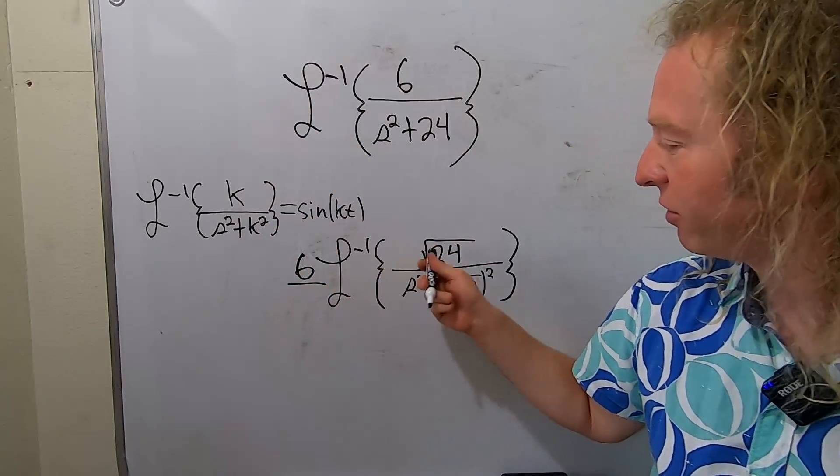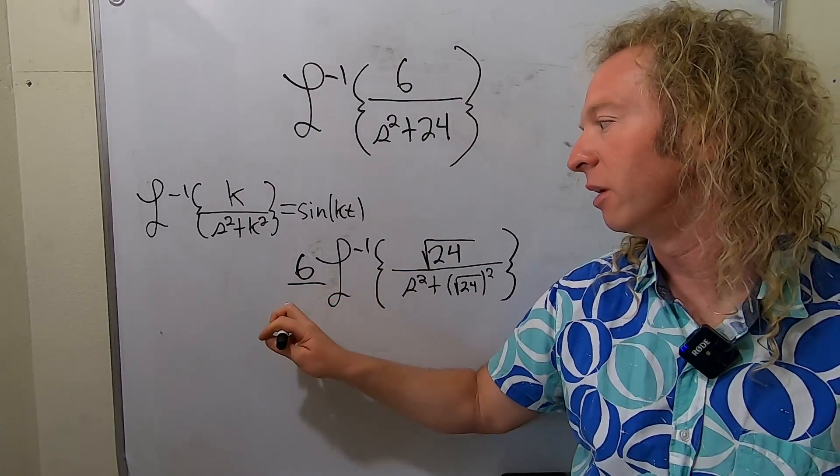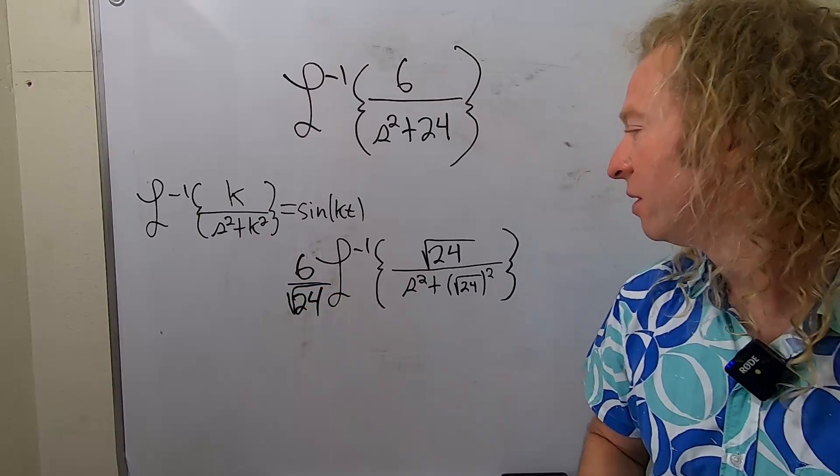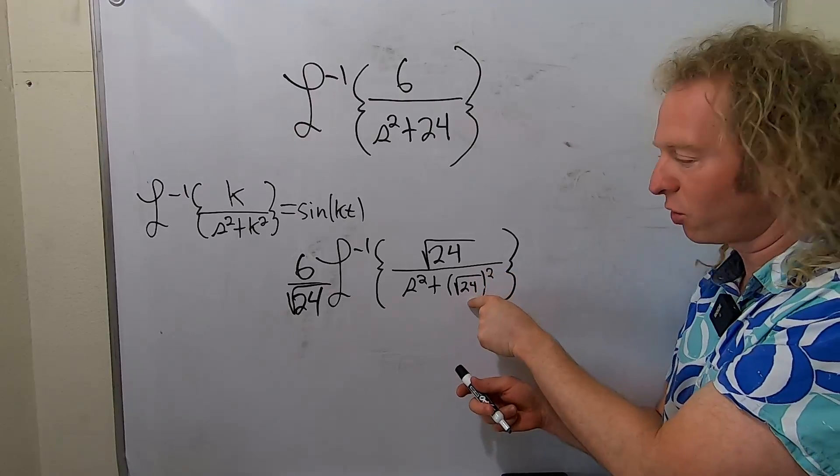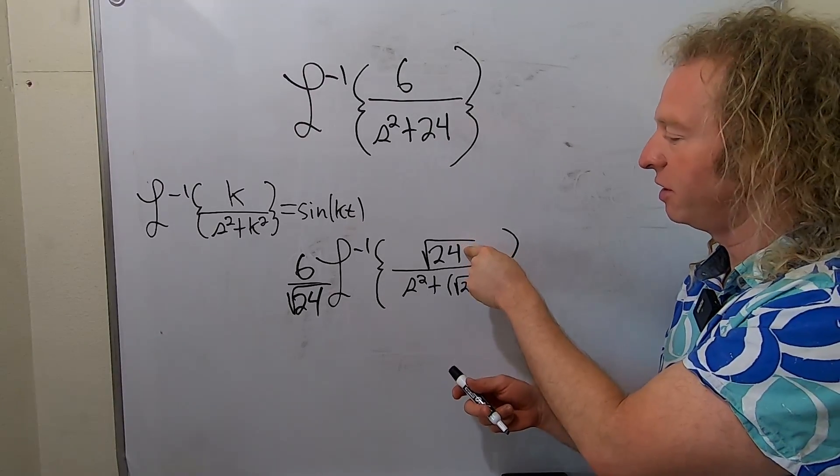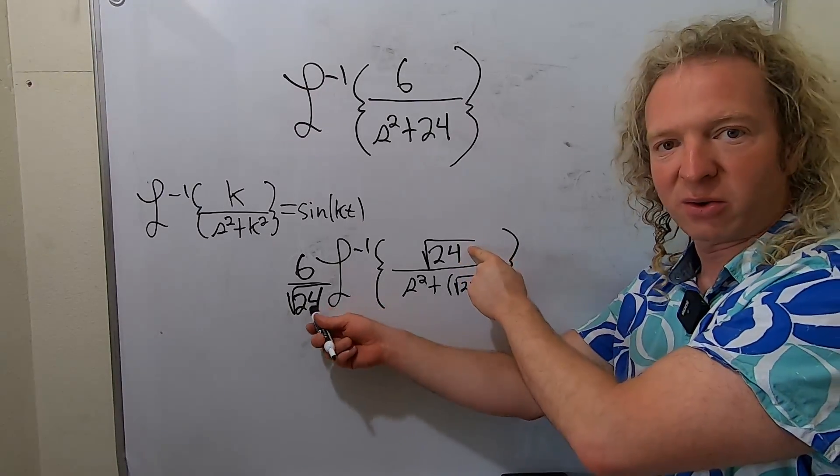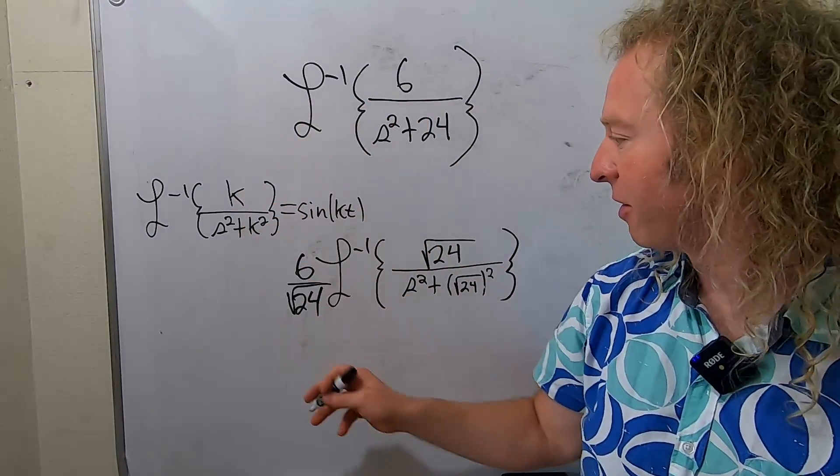To get rid of this square root of 24, I'm going to put it here. Boom, there it is. So again, we decided to rewrite 24 as square root of 24 squared. We put this here, but when we put it here, we've got to take it away. You see they cancel, and the 6 just came out.